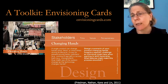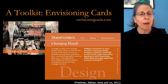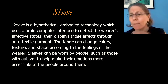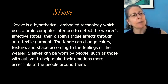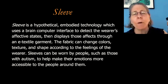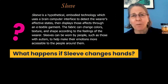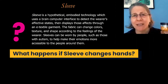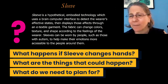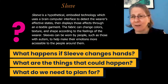We want to think about how use of this system can change as the technology changes hands. Going back to Sleeve — I want you to think about what happens if Sleeve changes hands. I'm going to flip the timer so you have some time. Write down or think about: if we had Sleeve and it was changing hands, what would we have to think about as designers? What are the things that could happen, what do we need to plan for? Go ahead and think, and I'll check in with you in a couple of minutes.